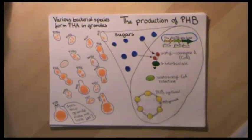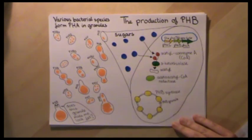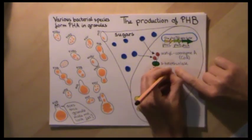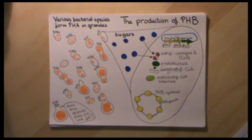3-ketothiolase combines two molecules of acetyl coenzyme A to form acetoacetyl coenzyme A.